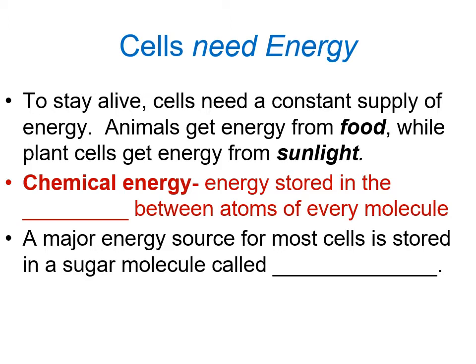Animals get their energy from food, while plant cells get their energy from sunlight. Chemical energy is the energy stored in the bonds between atoms of every molecule. It's really important for cells — even plants, which get their energy from sunlight, can't directly use that sunlight energy. They have to have chemical energy.